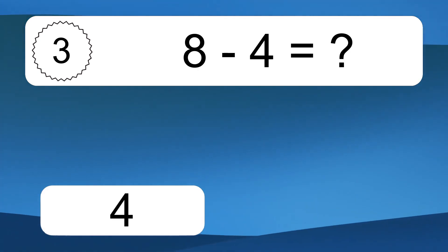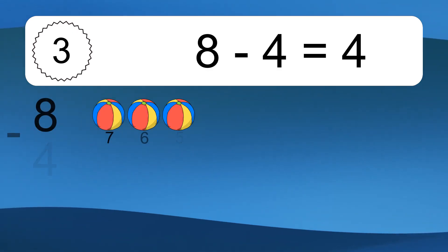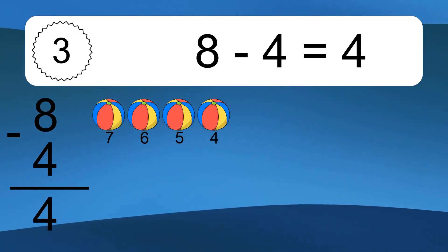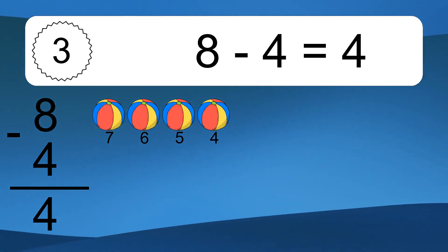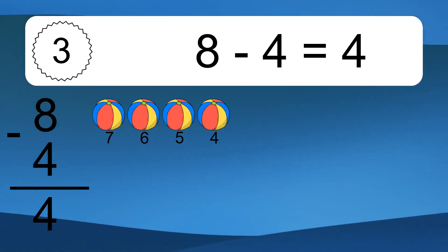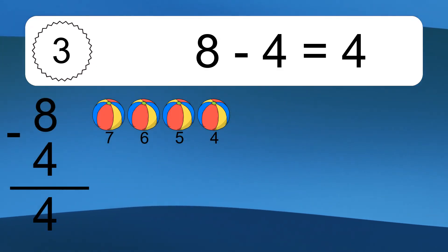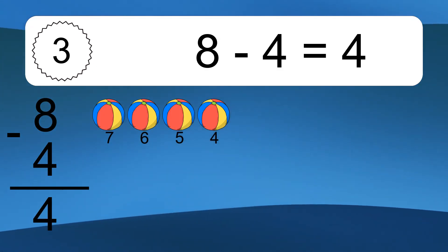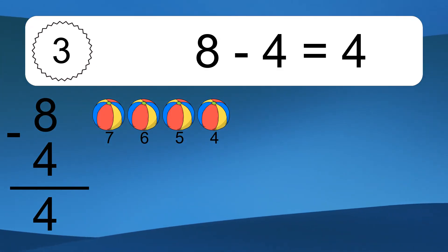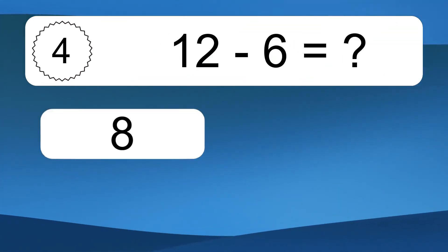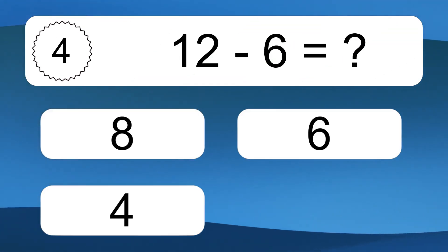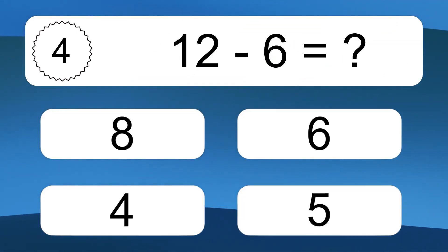8 minus 4 equals what? 8 minus 4 equals 4. Let's count it: 7, 6, 5, 4.